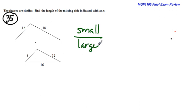So the ratio smallest to large will always remain the same, and they will give you one pair complete. So we have 8 and 12. 8 is in the small triangle, 12 is in the large triangle.